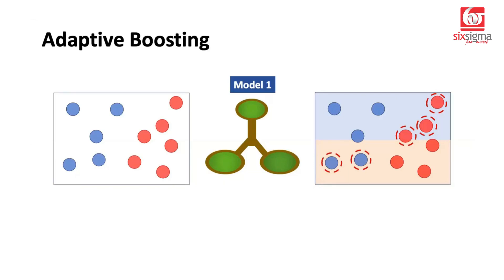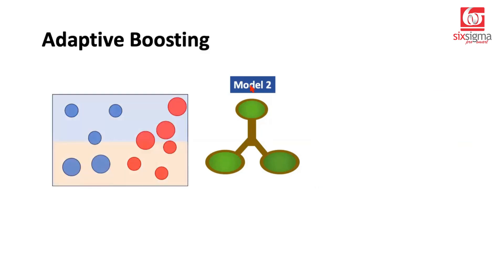Now in the successive iterations, it's going to give a higher weightage to these points. So you can see the radius of these points has gone up compared to the other points. Why? Because adaptive boosting says we need to focus more on these points. So we have model 2. Let's see how model 2 would decide.